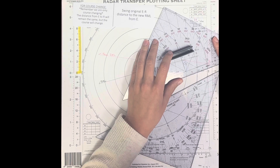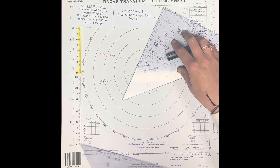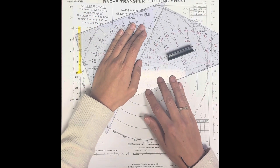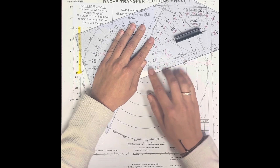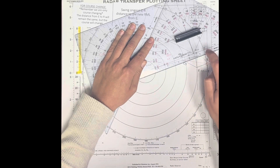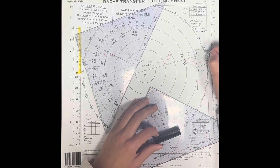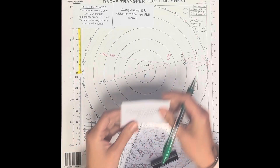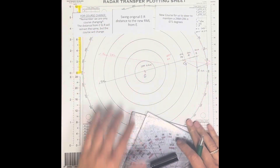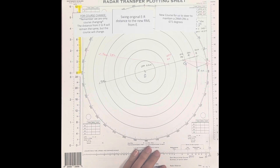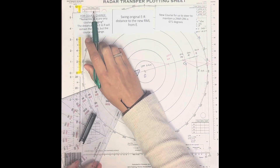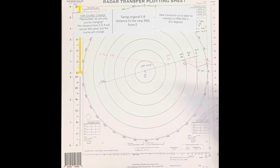Always make sure you have sturdy hands — I bumped my triangle a little bit there, so I am doing it again to get a more accurate measurement. Following that line, I got 071 degrees as our new course to steer to maintain that 2 nautical mile CPA. That is how you find your course change to avoid collision — remember, E to R, and you keep that same distance between E to R, just switch around the course.